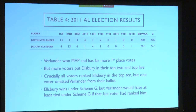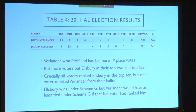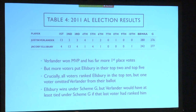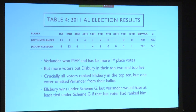Here's the 2011 AL election. Justin Verlander was named MVP by a large margin — 38 votes — and got by far the majority of first-place votes. This seems logical. But under Scheme G, which again values second place almost as high as first, Ellsbury would have narrowly beaten out Verlander. If you look at the data, Verlander has by far the most first-place votes, but Ellsbury has the most votes in the top five and in the top two.